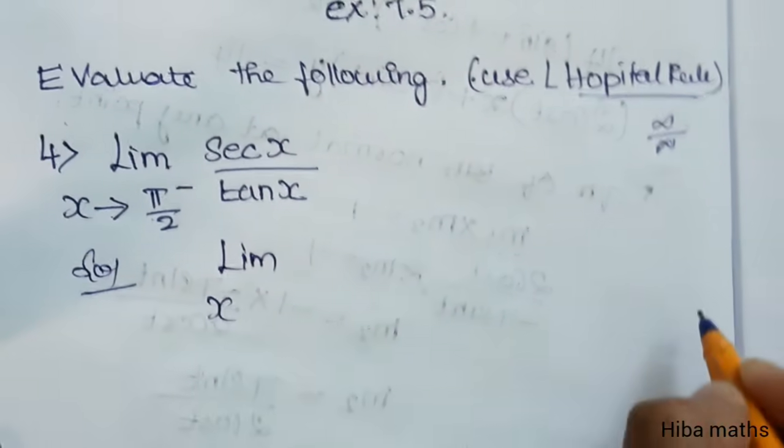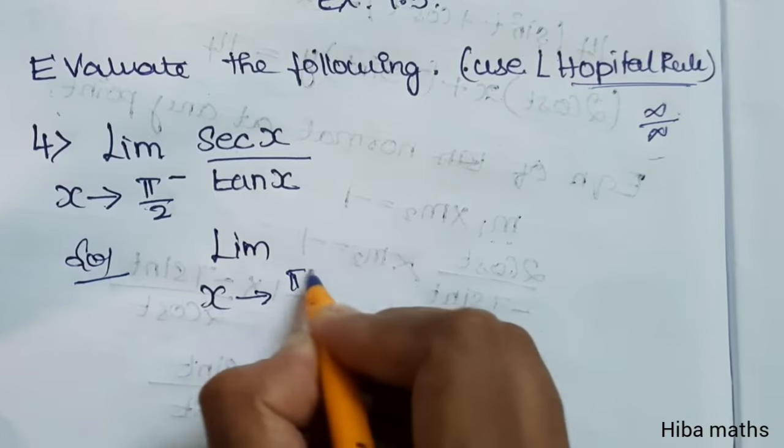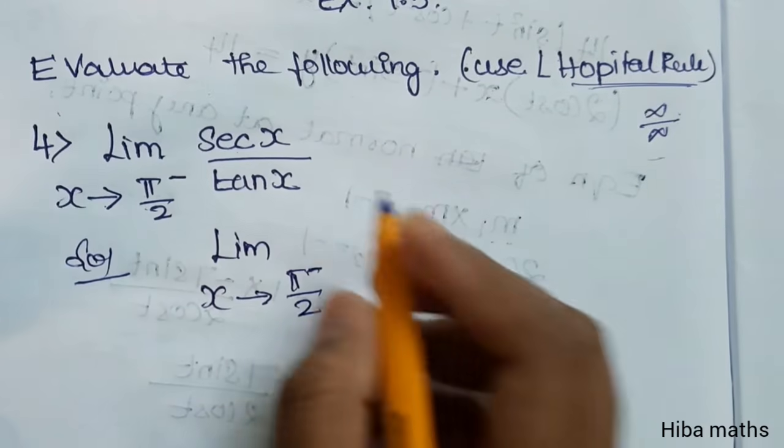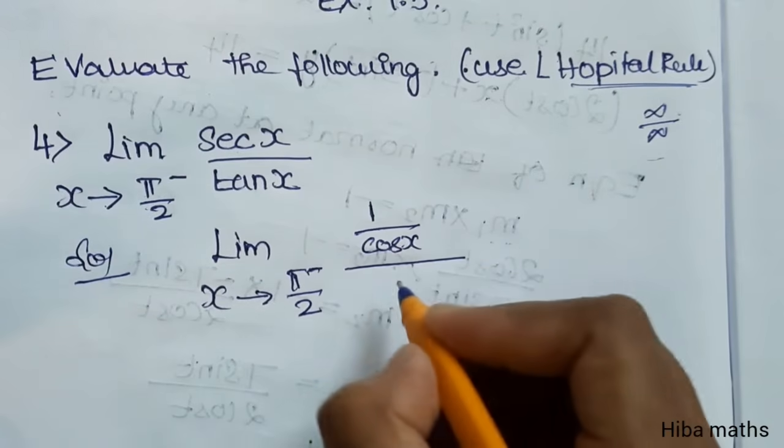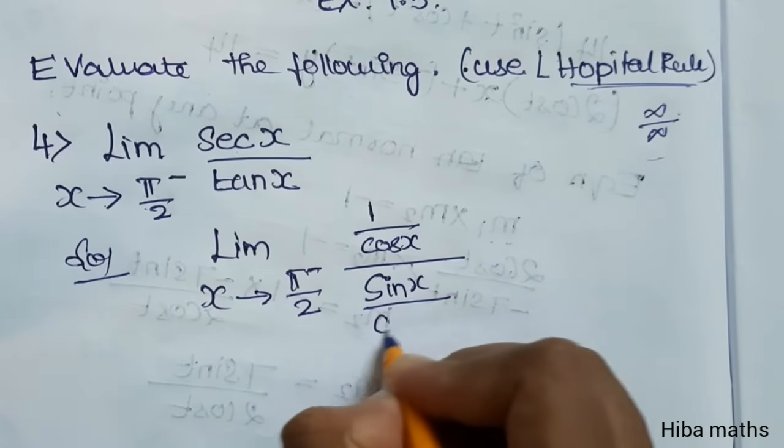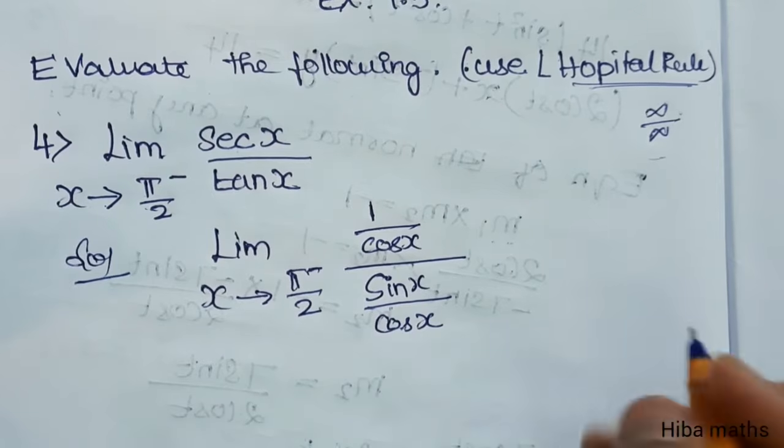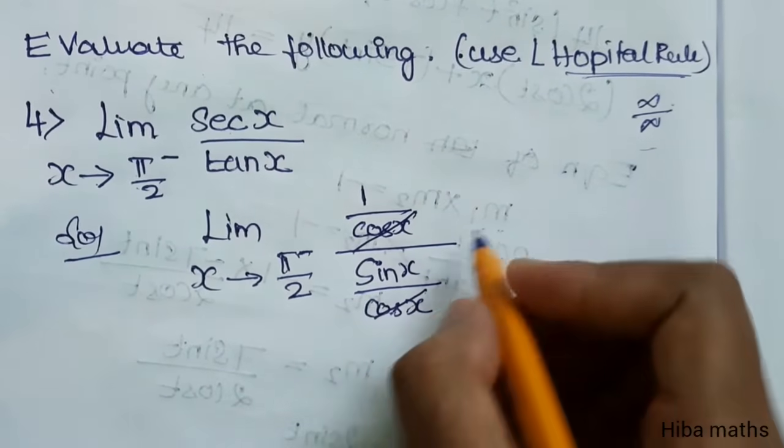Limit as x approaches π/2: sec x becomes 1/cos x, and tan x becomes sin x/cos x. When cos x cancels,